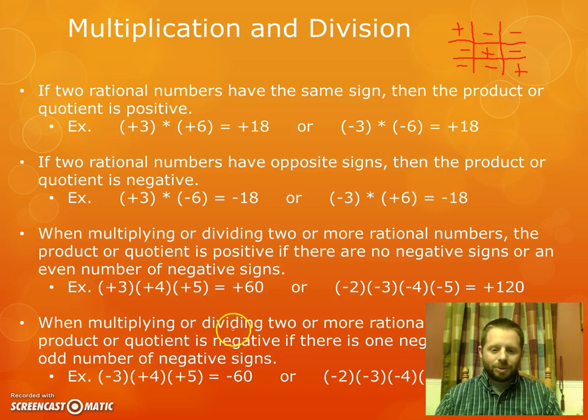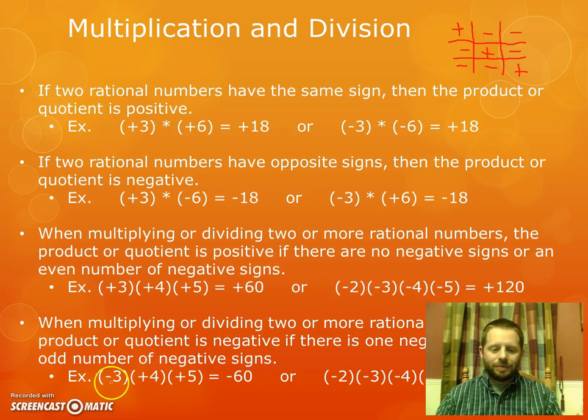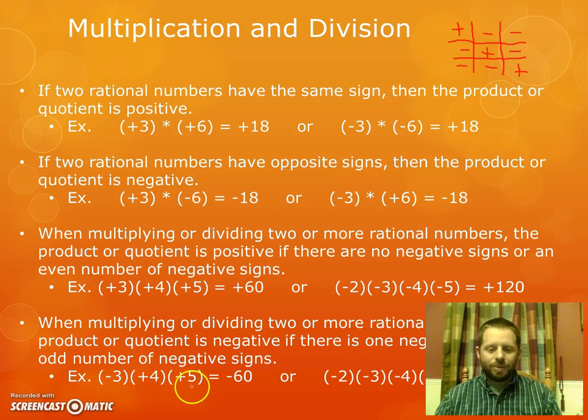Then our last one says when multiplying or dividing two or more rational numbers, the product or quotient is negative if there is one negative sign or an odd number of negative signs. So here in my first example, you have just the one negative three and the other two are positive. So the result then will be negative. Or in this last example here, we've got four factors again. But in this case, only the first three are negative. So you have an odd number of negative factors. So that means that you have a negative result in that example.